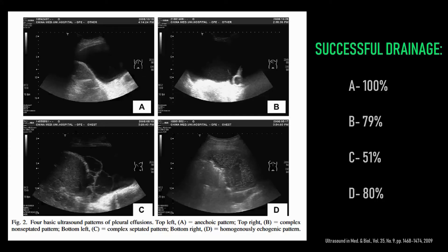Why does this matter? The characterization of the fluid has implications for the likelihood of success of drainage via a small-bore percutaneous catheter. In this study, patients with different types of effusions were followed after insertion of a percutaneous drain, and the likelihood of complete drainage was measured. In cases of purely simple effusions, there was almost 100% successful drainage. In box C, patients with complex septated effusions had only 51% successful drainage via a percutaneous catheter. In box D, the pleural fluid has multiple small hyperechoic densities — classic for a hypercellular infiltrate seen with malignancy — which can still be drained, albeit slightly less successfully than a simple transudate.